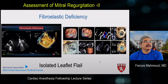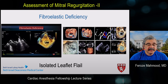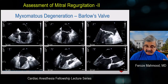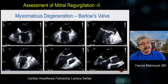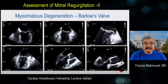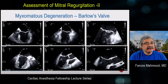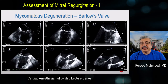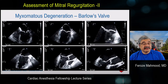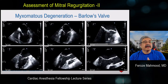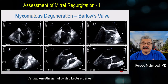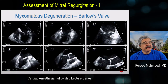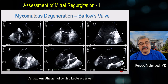Fibroelastic deficiency typically causes an isolated posterior leaflet flail, as opposed to myxomatous degeneration or Barlow's valve, which involves excess tissue bunched up in a small annulus, leading to prolapsing segments of both leaflets with the coaptation point prolapsing into the left atrium during systole beyond the annular plane. Another important finding in these valves is left atrial disjunction — due to chronic dilation and volume overload, the attachment of the posterior leaflet is displaced toward the left atrial side — implying that regurgitation has been present for a while, indicating chronicity.